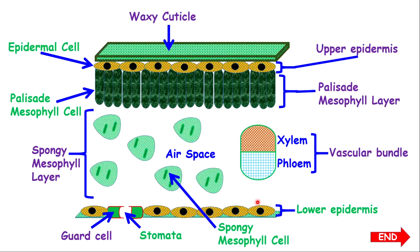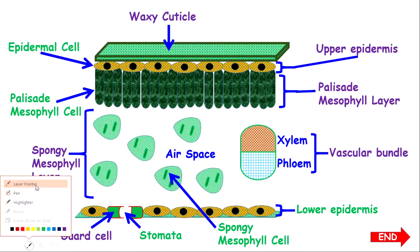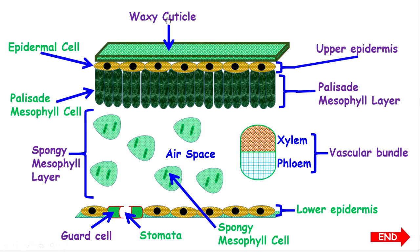Now below the spongy mesophyll layer, you have the lower epidermis. In the lower epidermis, you have what I call guard cells, and the space between the guard cells is called a stomata. So now we're going to jump into each part to talk about some functions and some descriptions.